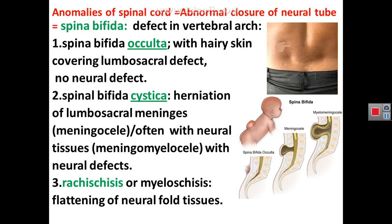Anomalies of the spinal cord are related to abnormal closure of the neural tube. If the neural tube fails to form properly, the condition is called spina bifida — a defect in the vertebral arch possibly associated with a neural tube defect. Spina bifida occurs in three forms: spina bifida occulta, spina bifida cystica, and rachischisis.